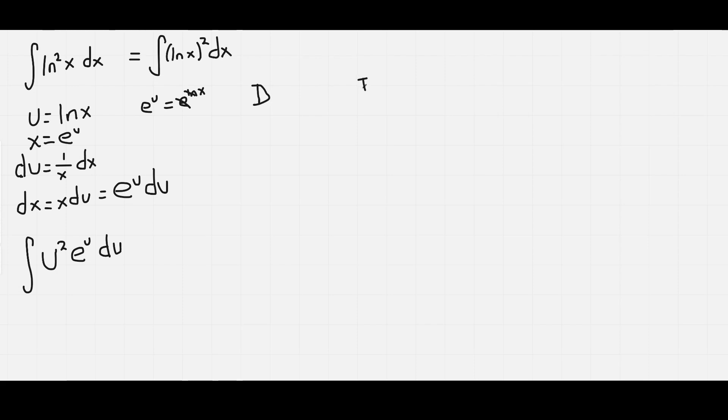There's a differentiation column and an integration column. What am I going to differentiate? Well, no choice really, u squared. And we're going to integrate e to the u. So next row minus: derivative of u squared is 2u, integral of e to the u is e to the u.